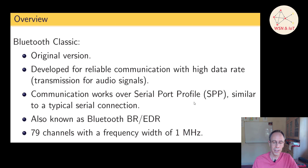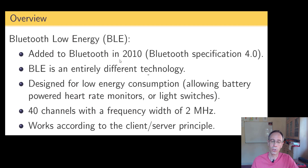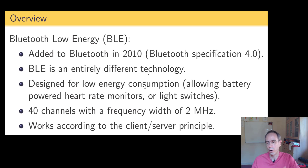What we mostly use these days is Bluetooth Low Energy. BLE is still quite new — it was added in 2010 to the Bluetooth specifications, coming into the spec with version 4.0. It's actually a totally different technology, so Bluetooth Low Energy is not equal to Bluetooth Classic. It works with 40 different channels with a frequency width of two megahertz. It's defined for low energy consumption, allowing battery-powered devices like heart rate monitors. It works not like serial communication but with the client-server principle.